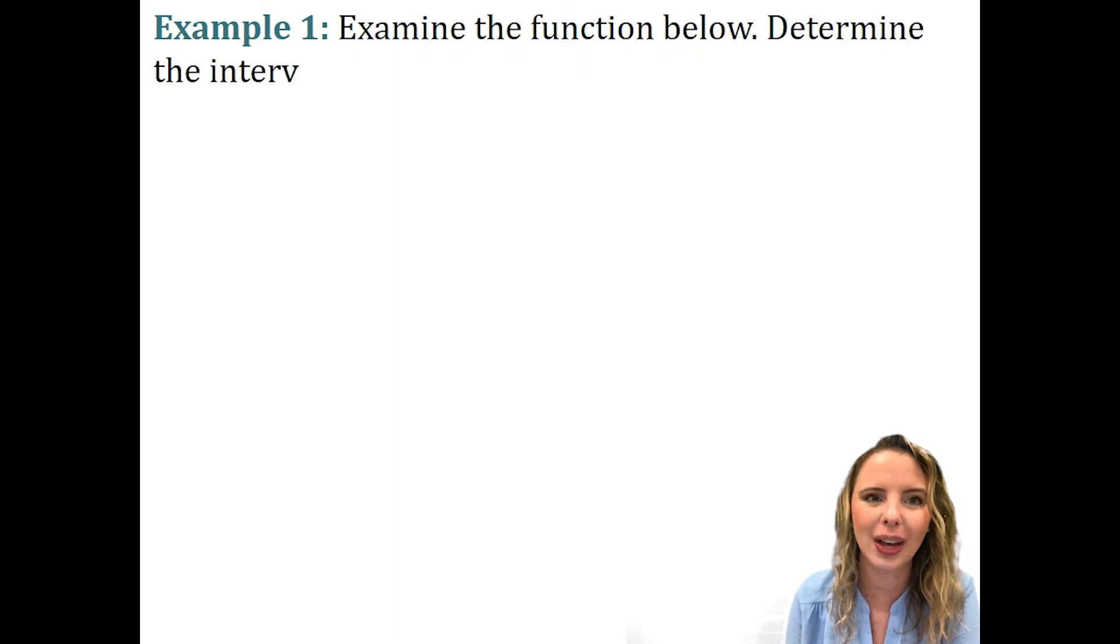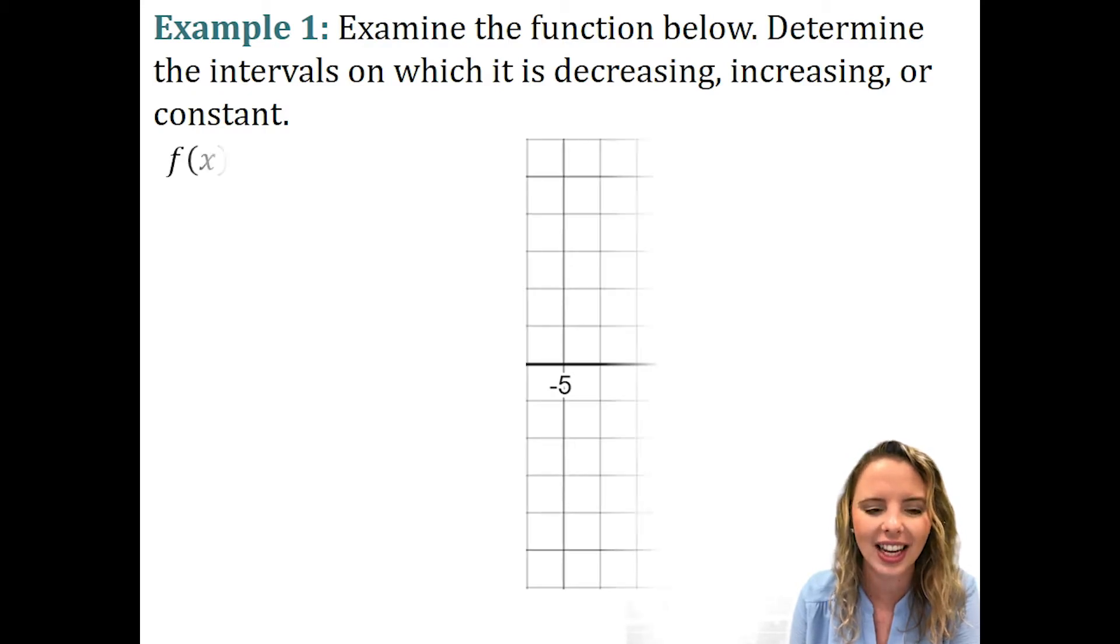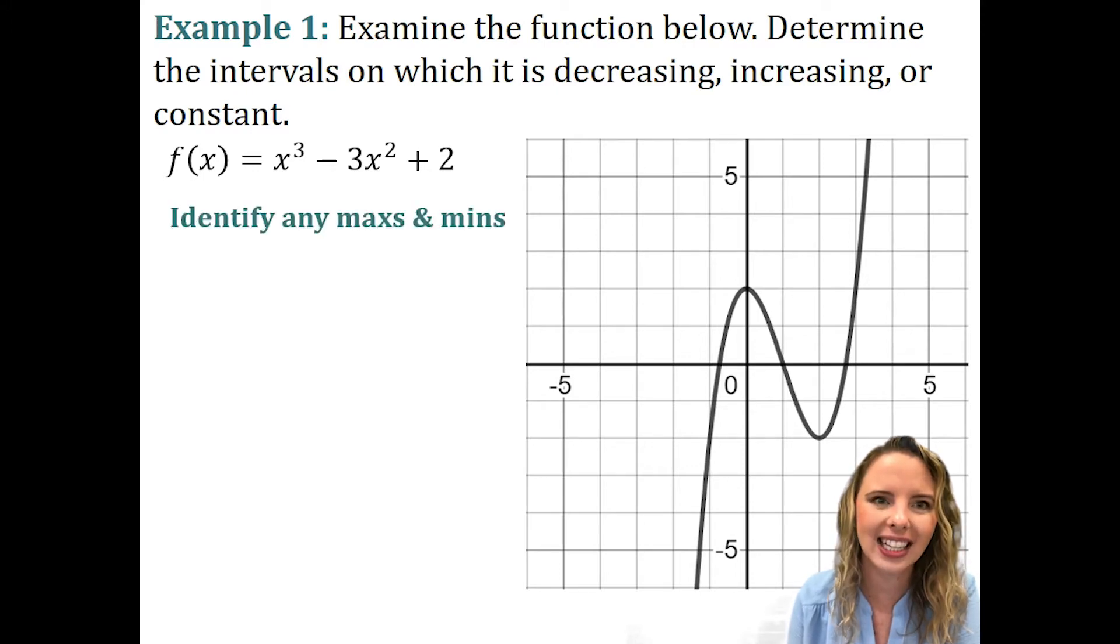We are going to examine the function below and we're going to determine the intervals on which it is increasing, decreasing, or constant. We have the function f of x equals x cubed minus 3x squared plus 2 and the graph is on the right of the screen. Our first step is we want to identify max and mins because our intervals switch at a max and a min. On our axes, we have a max and at x equals 2, we have a minimum.